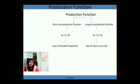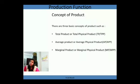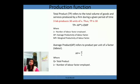Before explaining those theories in detail, let me mention some basic concepts of product. There are three basic concepts: total product (or total physical product), average product (or average physical product), and marginal product (or marginal physical product). Total product means the total volume of goods and services produced by a firm during a given period of time. For example, if there are three laborers and they produce 30 units, then the total product is 30.